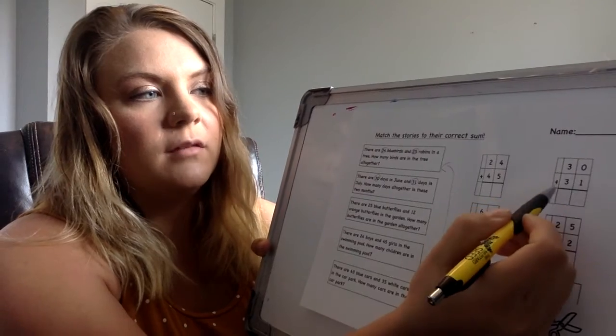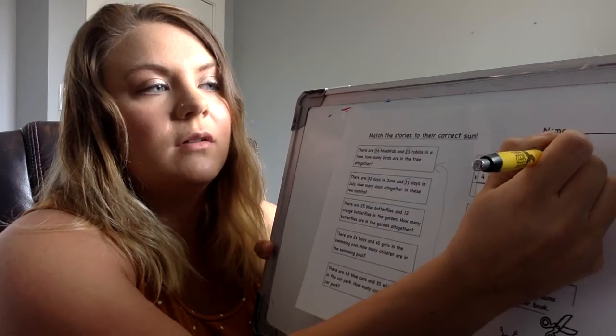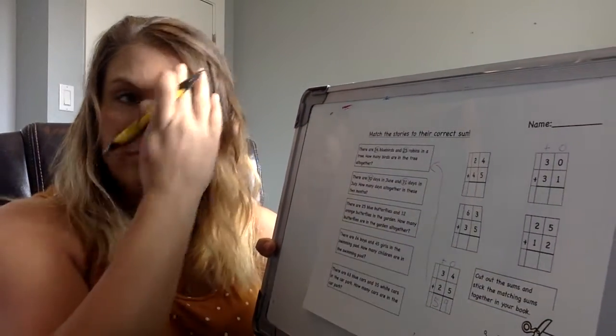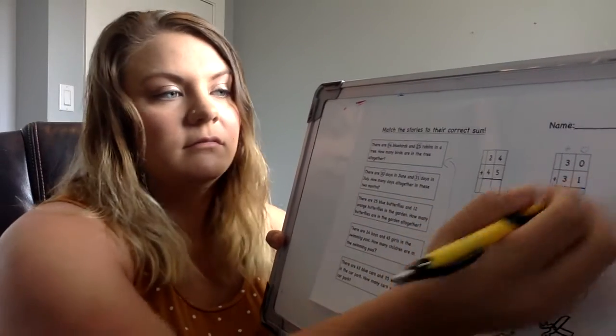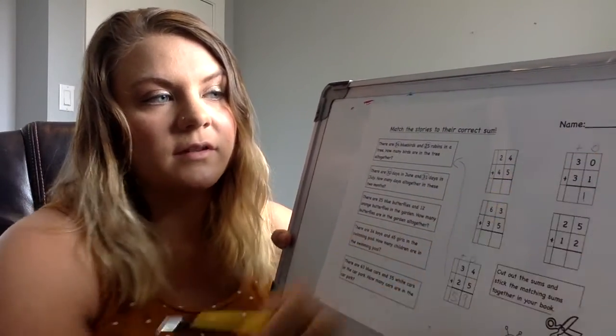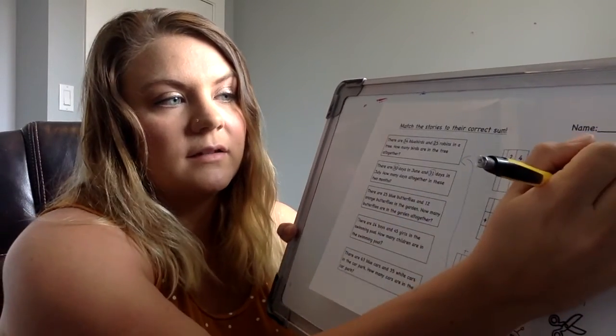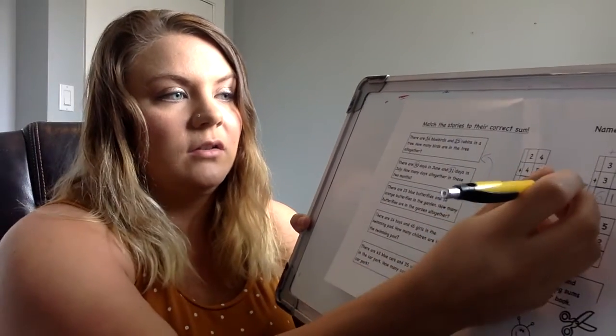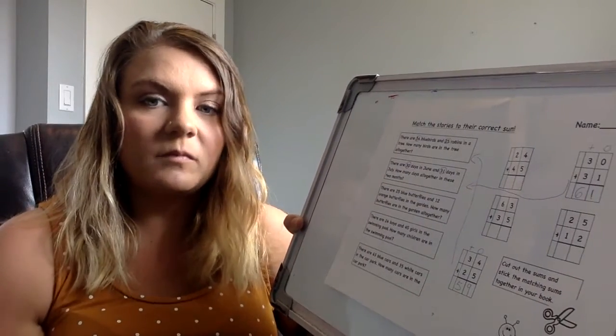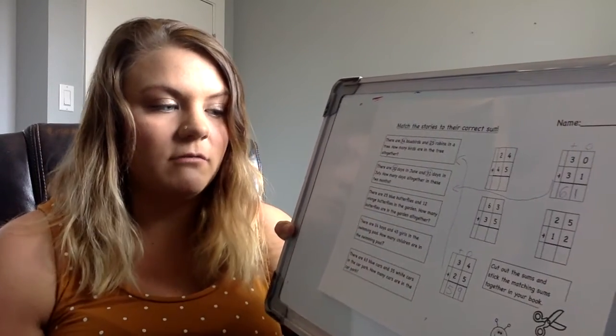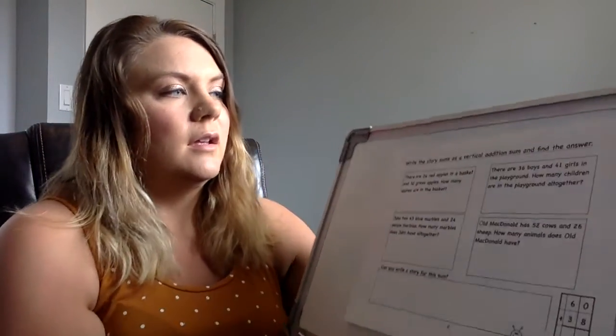This one, right? 30 and 31. So we start with our ones. If you want to draw it out, if you want to use a number line, do whatever is best for you. So zero and one, that's really easy, we're sticking with a one. And then 3 plus 3 is 6. So your answer is 61. You can draw your line or you can cut them out and put them together. Up to you. I want you to try the next three on your own there. If you have any questions, please email me.